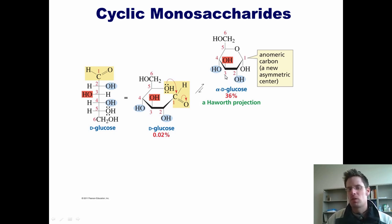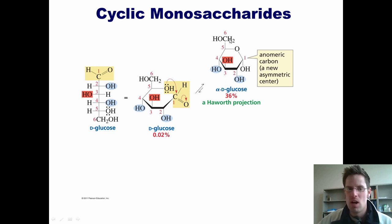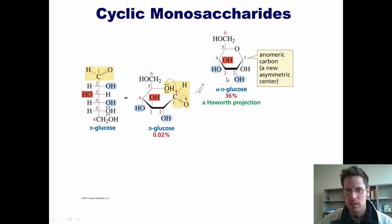The Haworth projection doesn't show us equatorial or axial. Instead, it shows us up and down. You'll notice that all of the OHs pointing to the right in glucose along the main carbon spine are pointing down in the Haworth projection, and the one OH pointing to the left in glucose is pointing up.